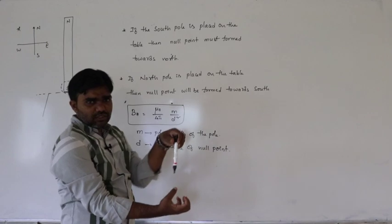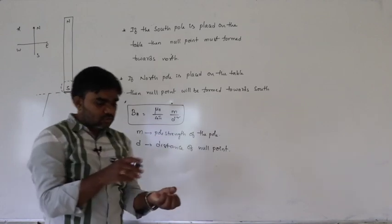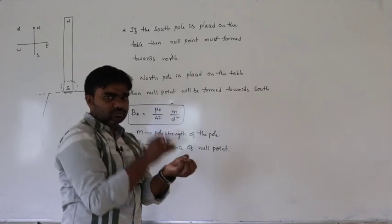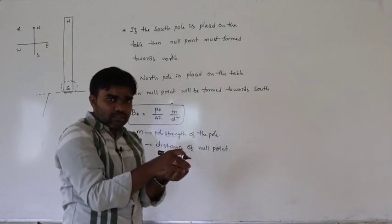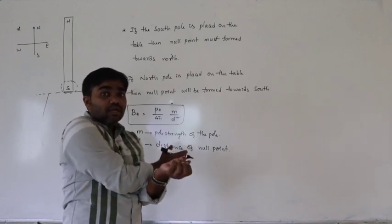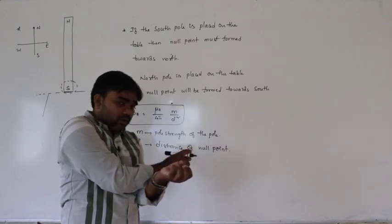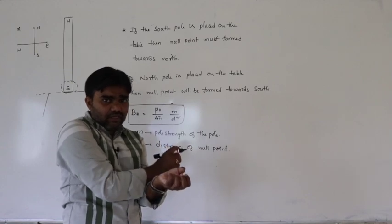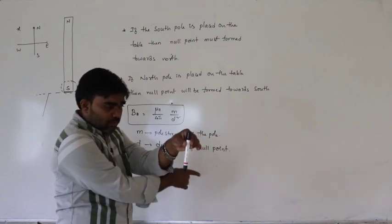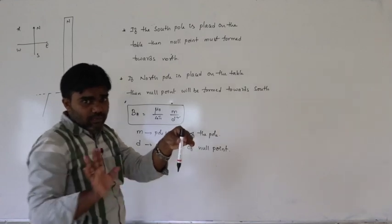For example, if the south pole is placed on the table, let us say this is east, west, north, south. The null point must form towards the north side. Why? Because at that point, considering a unit north pole, the north pole is attracted by the south pole in the direction of BH. So BH equals B at the null point.